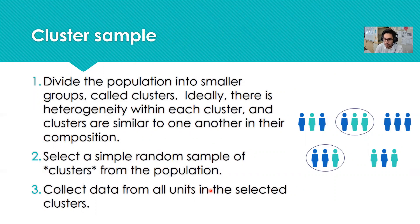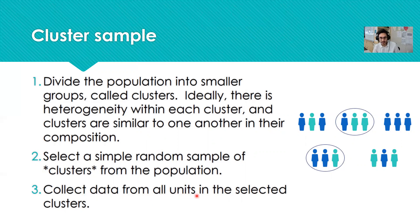Cluster sampling also requires dividing the population into smaller groups, but we call these groups clusters. Ideally, within each cluster there is heterogeneity, meaning each cluster mirrors what we see within the population on a smaller scale — a good mix of individuals, so clusters are similar to one another. Then instead of selecting individual units, we select entire clusters. We might number the clusters one to five, pull two numbers out of a hat, and collect data from all units in those selected clusters.